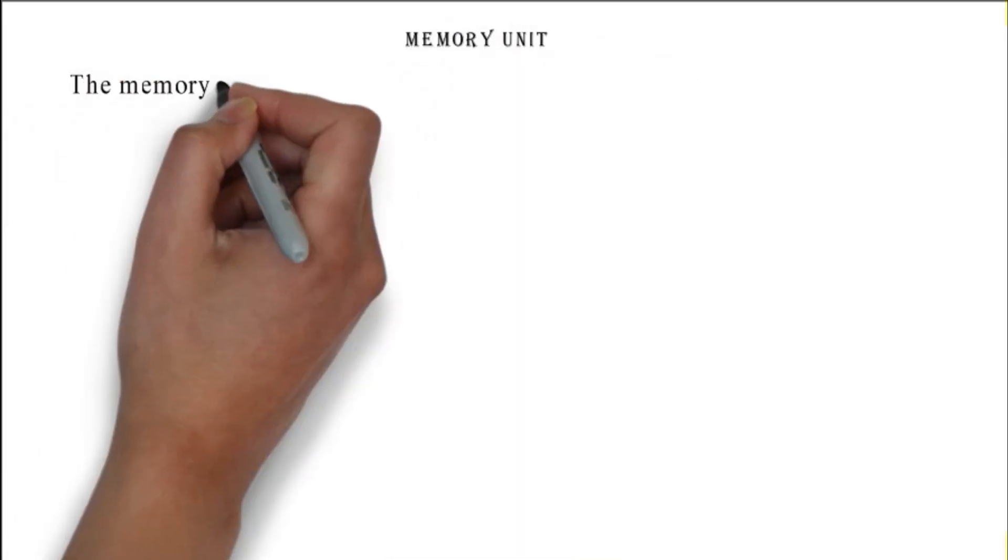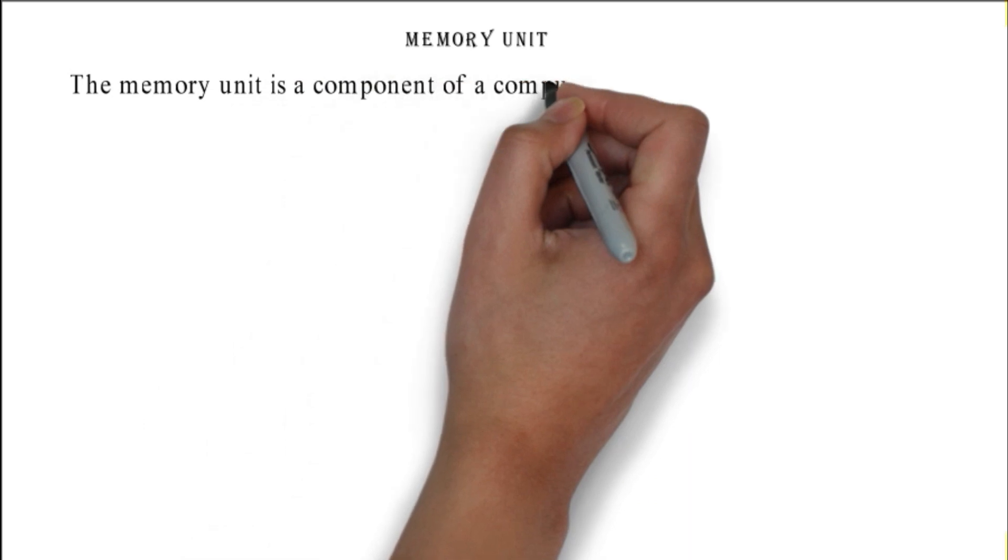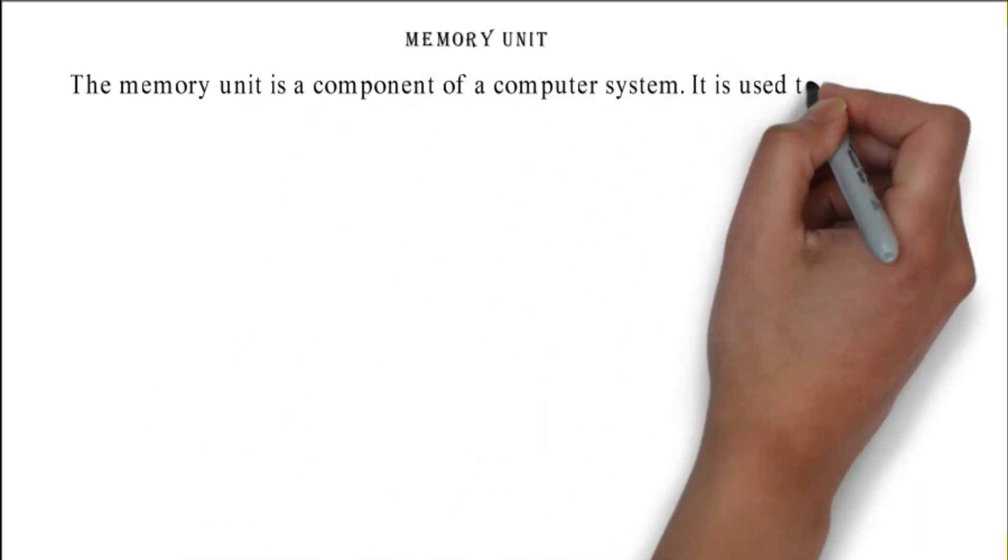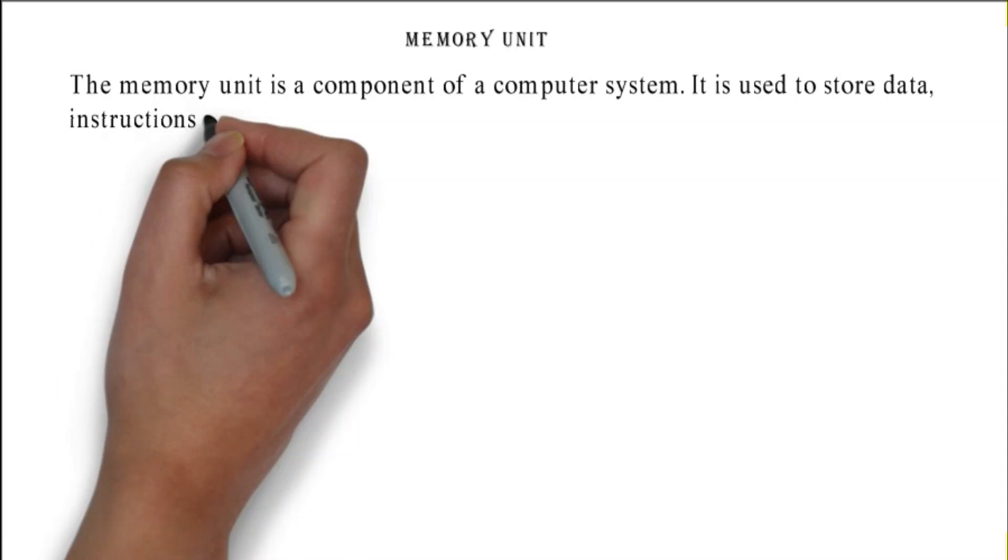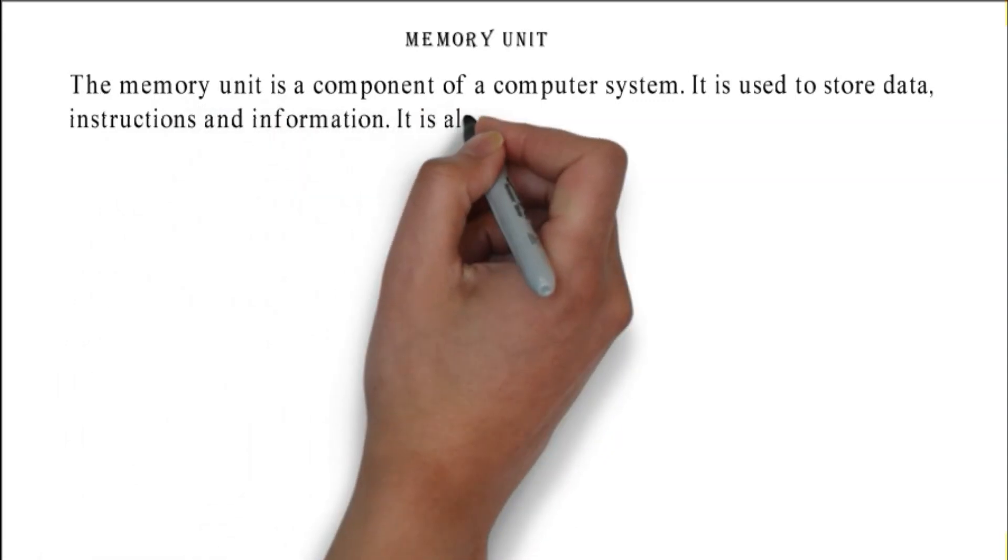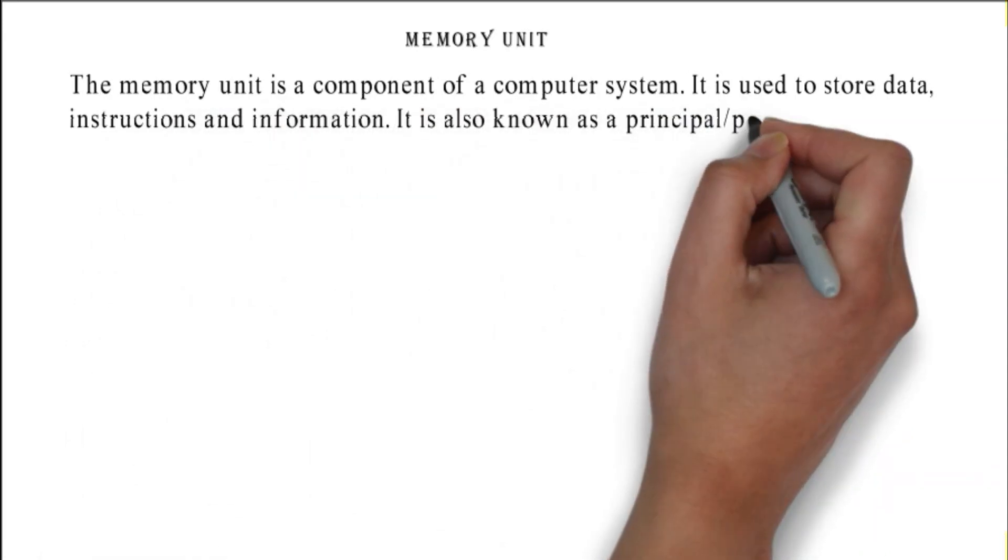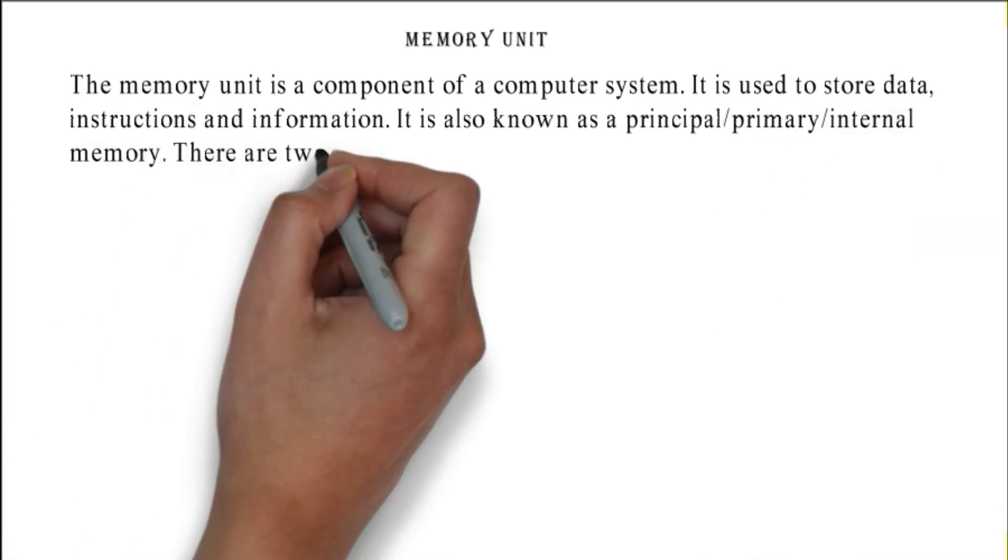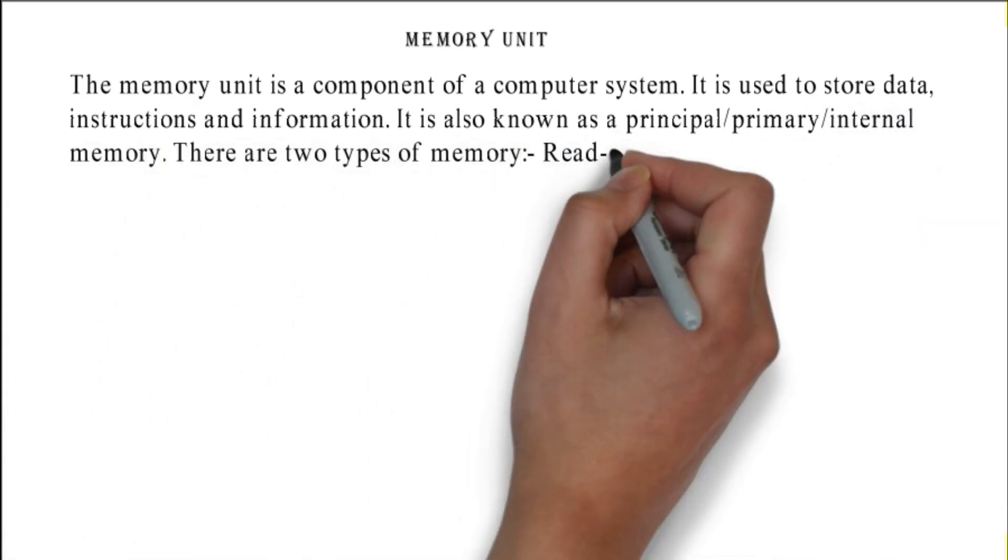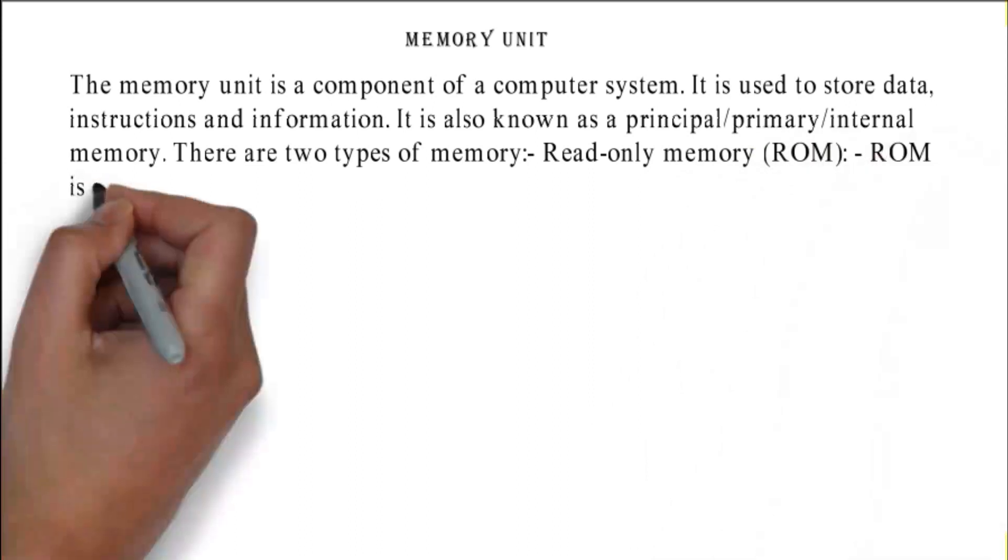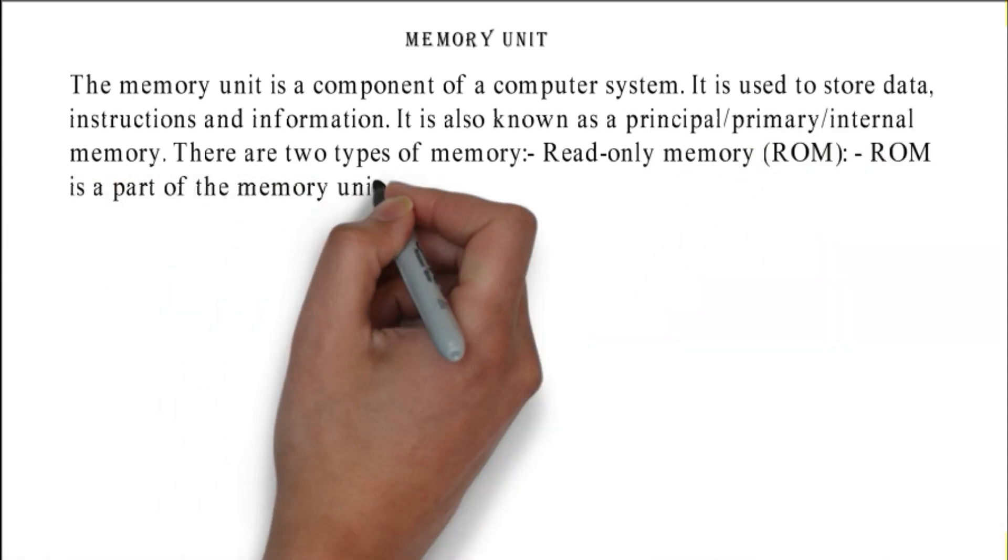Memory unit: the memory unit is a component of a computer system. It is used to store data, instructions, and information. It is also known as a principal/primary/internal memory. There are two types of memory: read-only memory (ROM). ROM is a part of the memory unit.